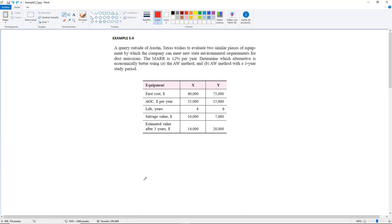Example 5.4. A quarry outside of Austin wishes to evaluate two similar pieces of equipment by which the company can meet new state environmental requirements for dust emissions. The minimum attractive rate of return is 12% per year. Determine which alternative is economically better using a) the annual worth method and b) the annual worth method but with a three-year study period.